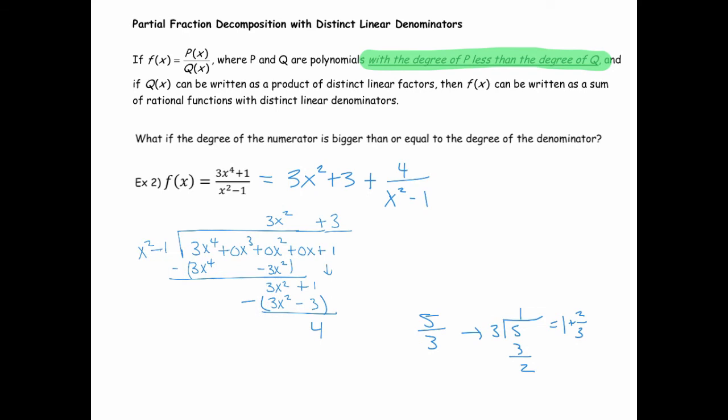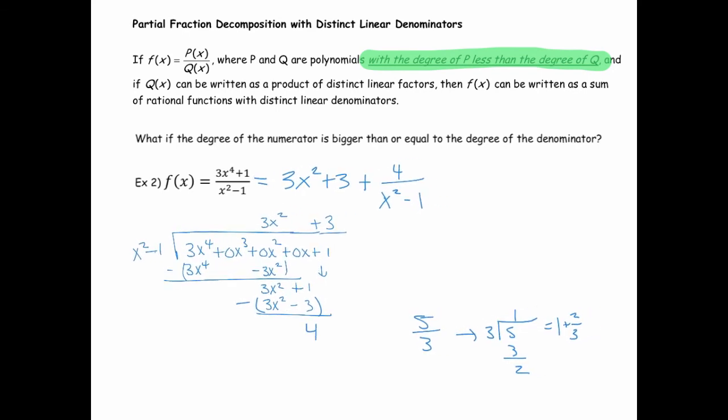And so then, this is not a rational expression, but the 4 over x squared minus 1 is. So according to the partial fraction decomposition, we can rewrite this. We can rewrite this as, this piece, as 4 over x plus 1 times x minus 1. And that means it can be written as some number over x plus 1 plus some other number over x minus 1. So the point of that is that if the degree of the numerator is not strictly smaller than the degree of the denominator, you need to do a division first.